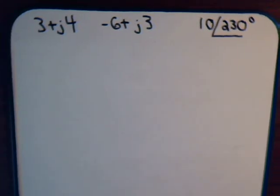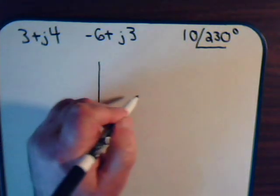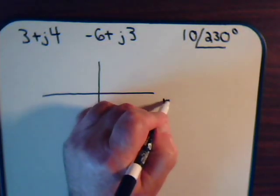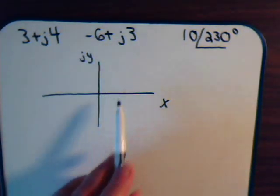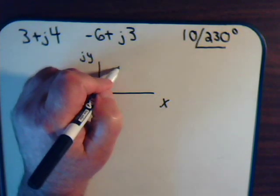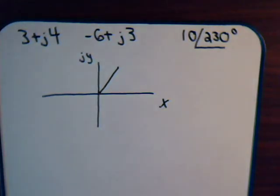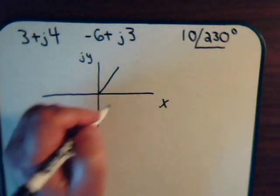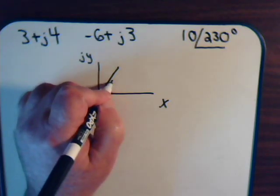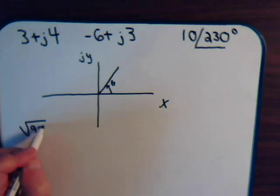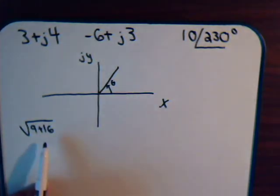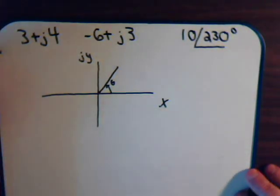For the first example, we have 3 plus J4. To make a crude graph: here is the X axis and the JY axis. We're going over 3 units and then up 4 units, so the vector might look something like this. If we want to express this in polar form, we need to know its magnitude and the angle it makes with the positive X axis. The magnitude would be the square root of 9 plus 16 — that's the square root of 25, which is 5.